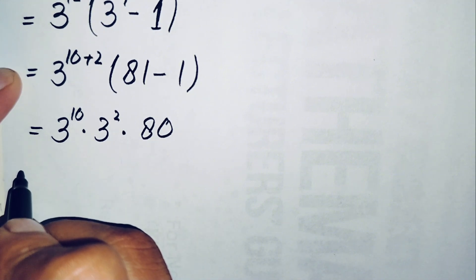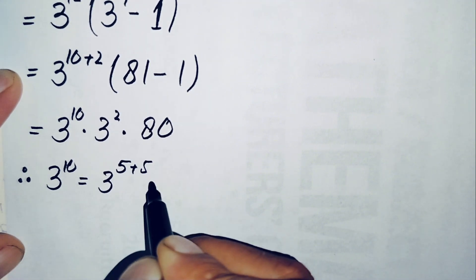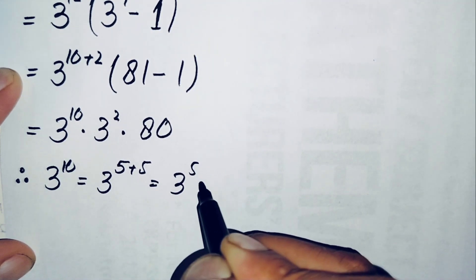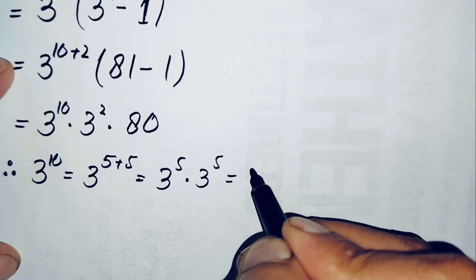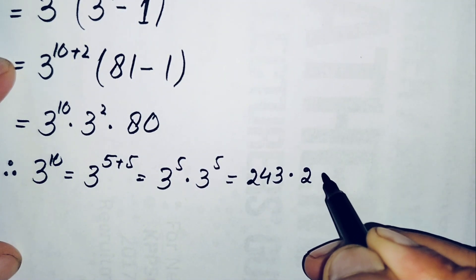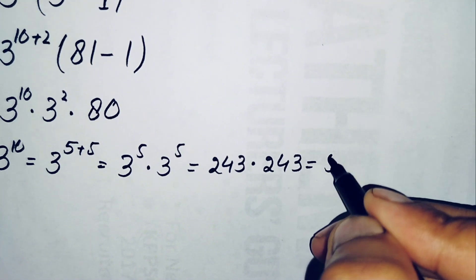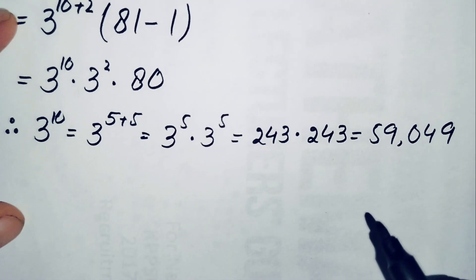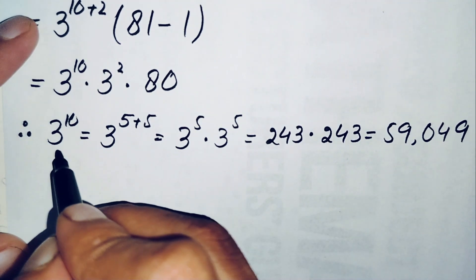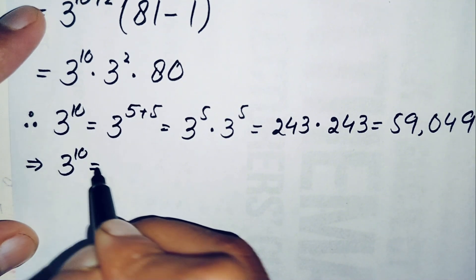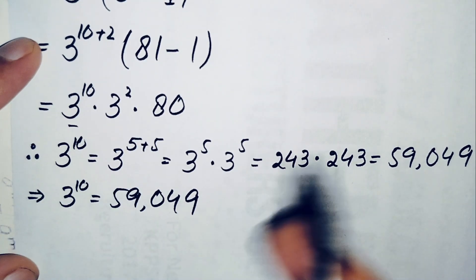We need to find the value of 3 raised to power 10. We write it as 3 to power 5 plus 5, which equals 3 to power 5 times 3 to power 5. Since 3 to the power 5 is 243, we get 243 times 243, which equals 59049. As math students we should know that 3 raised to power 10 is 59049.